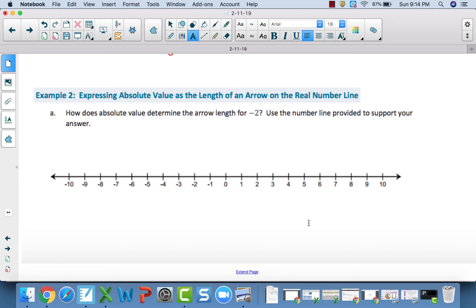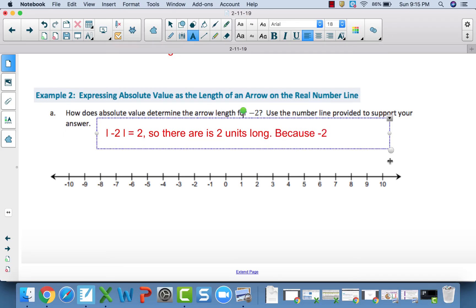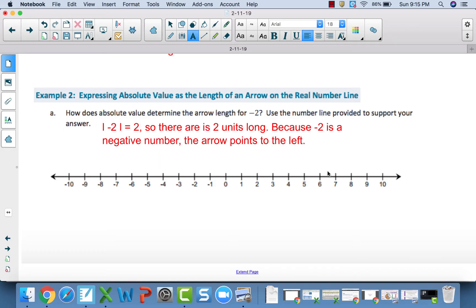Example number two is having us look at some absolute values. So, question A, how does absolute value determine the arrow length for negative two used in number line provided to support your answer? Well, we know the absolute value of negative two equals two, so the arrow is two units long. Now, the only thing we need to know now is the direction, and because negative two is a negative number, the arrow points to the left. So, basically, if I went to draw this with my arrow, with my vector, we know it's going to be two units long, because the absolute value of negative two is two, and we happen to go to the left, because that two is a negative number.